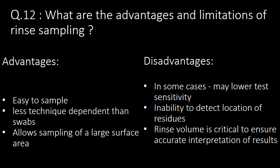The next important question: what are the advantages and limitations of rinse sampling? Advantages include: this technique is very easy to sample, it is less technique-dependent than swab sampling, and it allows sampling of large surface areas. Disadvantages include: it may lower test sensitivity in some cases, inability to detect the location of residues, and rinse volume is critical to ensure accurate interpretation of results.